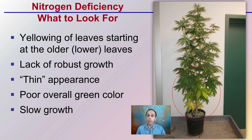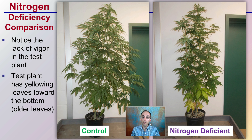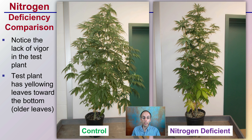If you're looking at just this image, it's very hard to do that comparison. So let's take a look at this plant compared to what would be a normal plant. We can see the control plant over here — that's how a plant should look if it was fed a balanced fertilizer. Now you can really see that lack of vigor in the test plant. This test plant also has really yellowing leaves on the older, lower portion of the plant, showing a nitrogen-deficient plant when compared to a normal plant of the same age.